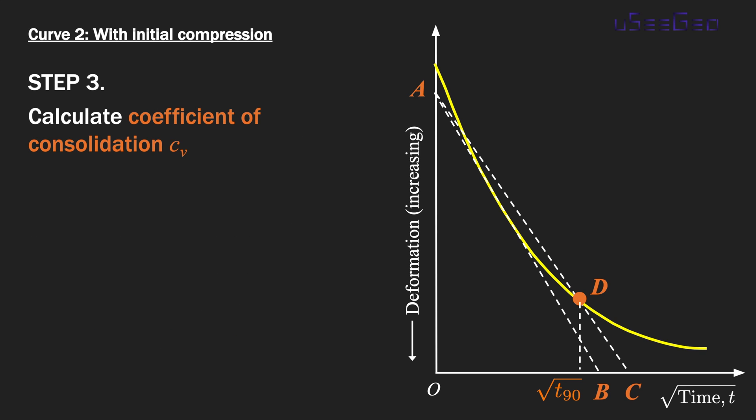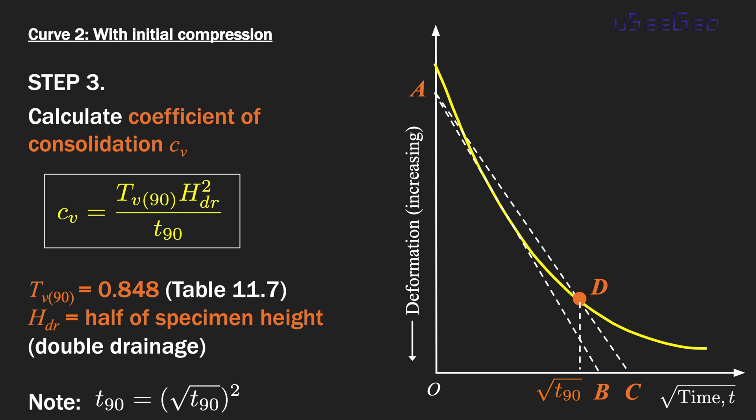Once you have t₉₀, you can calculate c_v using Terzaghi's solution. Same equation here, where the time factor T_v90 is 0.848. This is again from table 11.7. HDR is the drainage distance—it's half of the specimen height. That's basically the square-root-of-time method for 1D consolidation test results.